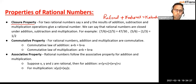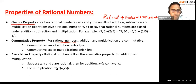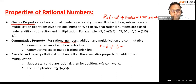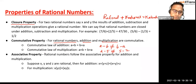Now let's go to the next topic: commutative property on rational numbers. Commutative law says a plus b equals b plus a — it doesn't change any value. Similarly, for multiplication: a into b equals b into a. However, this is not true for subtraction — for example, 2 minus 5 does not equal 5 minus 2. And it's not true for division either. So commutative property applies to addition and multiplication only.